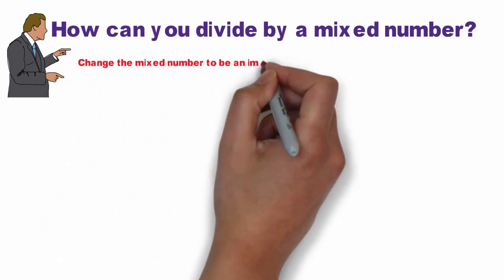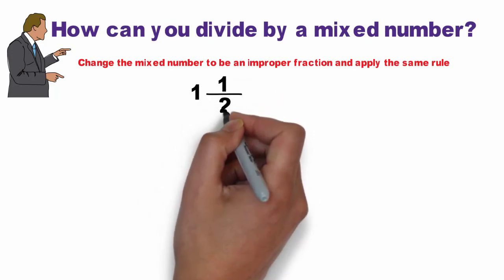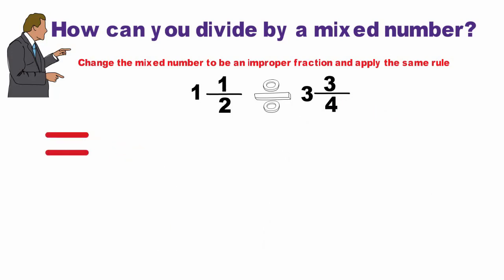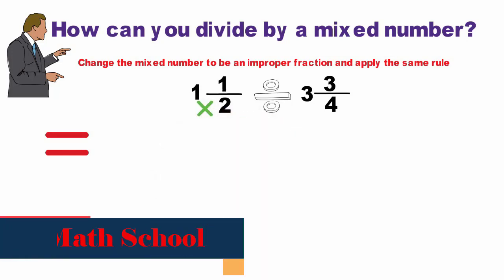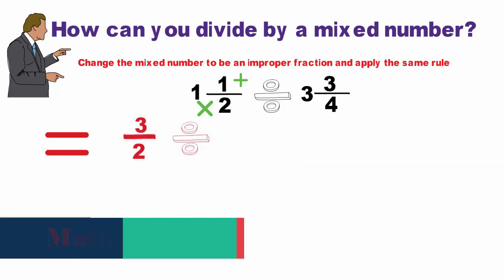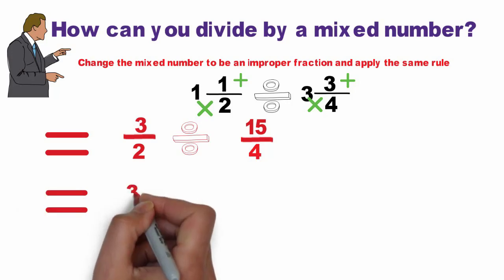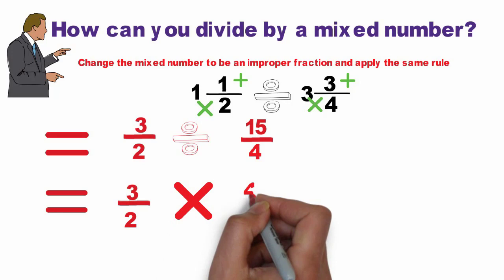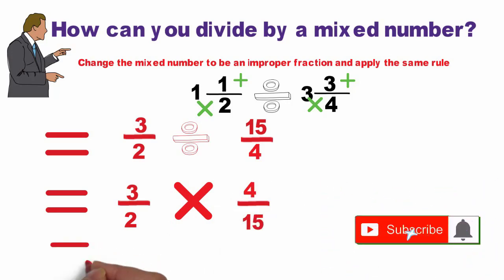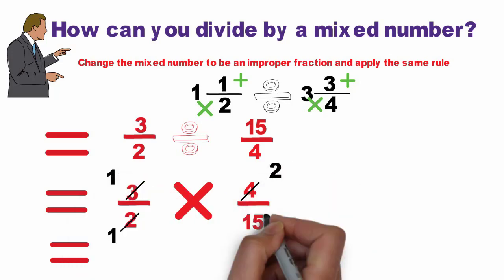Now ask yourself: how can you divide by a mixed number? Just change the mixed number to an improper fraction and apply the same rule. For example: 1 and 1 half divided by 3 and 3 over 4. Convert 1 and 1 half: 1 times 2 plus 1 equals 3 over 2. Convert 3 and 3 over 4: 3 times 4 plus 3 equals 15 over 4. Now keep 3 over 2, multiply by the reciprocal 4 over 15. Cancel: divided by 2 equals 1, divided by 2 equals 2, divided by 3 equals 1, divided by 3 equals 5. Result is 2 over 5.